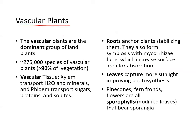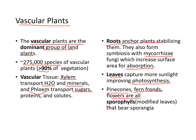Vascular plants are the dominant group of land plants, with over 275,000 species making up more than 90% of vegetation. Vascular tissues include xylem for water and minerals, and phloem for transporting sugars, proteins, and solutes. Roots anchor the plants and form symbiosis with mycorrhiza fungi to increase surface area for absorption. Leaves capture more sunlight, improving photosynthesis. Pinecones, fern fronds, and flowers are all sporophylls — modified leaves that bear sporangia.